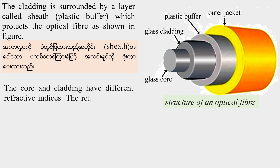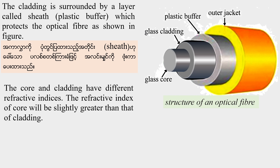The core and cladding have different refractive indexes. The refractive index of the core will be slightly greater than that of the cladding.